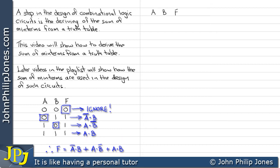Let's have a look at the following truth table, where we have a and b as the inputs with their combinations, and f as the output. We'll choose the first two rows as being 1s and the others as 0.